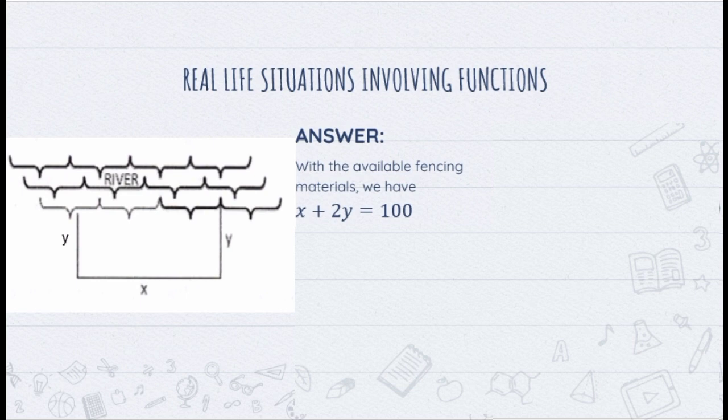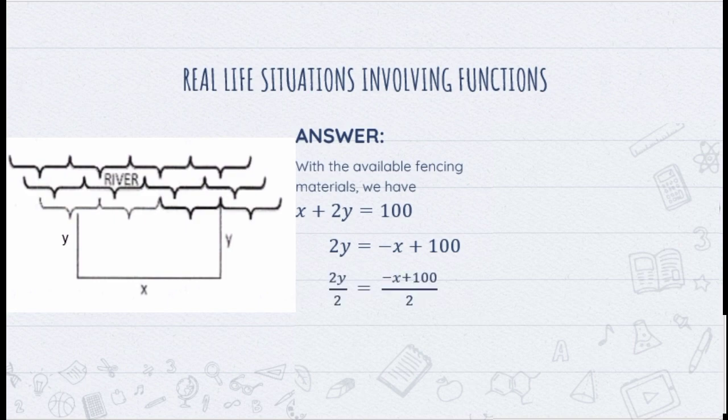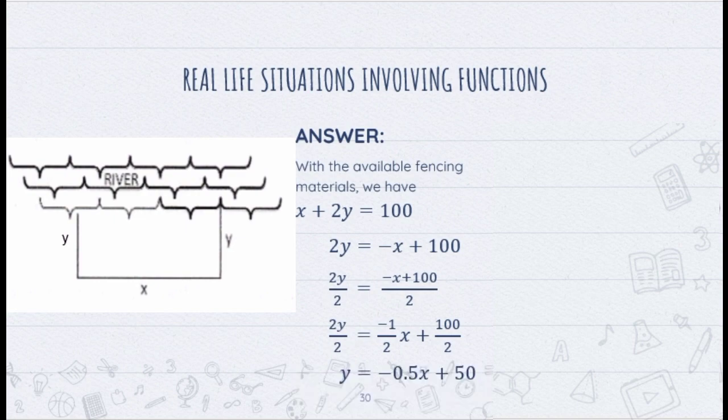As the problem states, we have to get the value of the function in terms of X. Therefore, we have to isolate Y on one side, transposing X to the other side, giving us 2Y equals negative X plus 100. Now we divide both sides by 2 to get Y, giving us Y equals negative 0.5X plus 50.